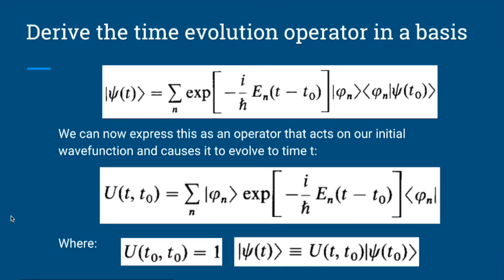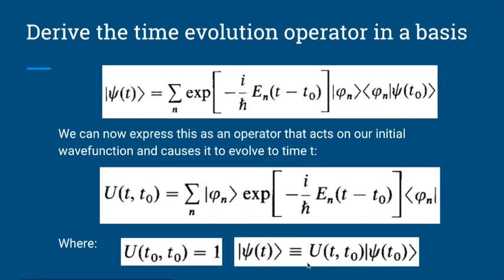The time evolution operator has some properties. If we have the time evolution from t₀ to t₀, that's equal to the identity — no time has gone by, nothing can happen in zero change in time. So U(t₀, t₀) equals the identity. And another way of writing psi of t is that it comes from taking our initial psi of t₀ and evolving it in time from t₀ to time t using the time evolution operator.